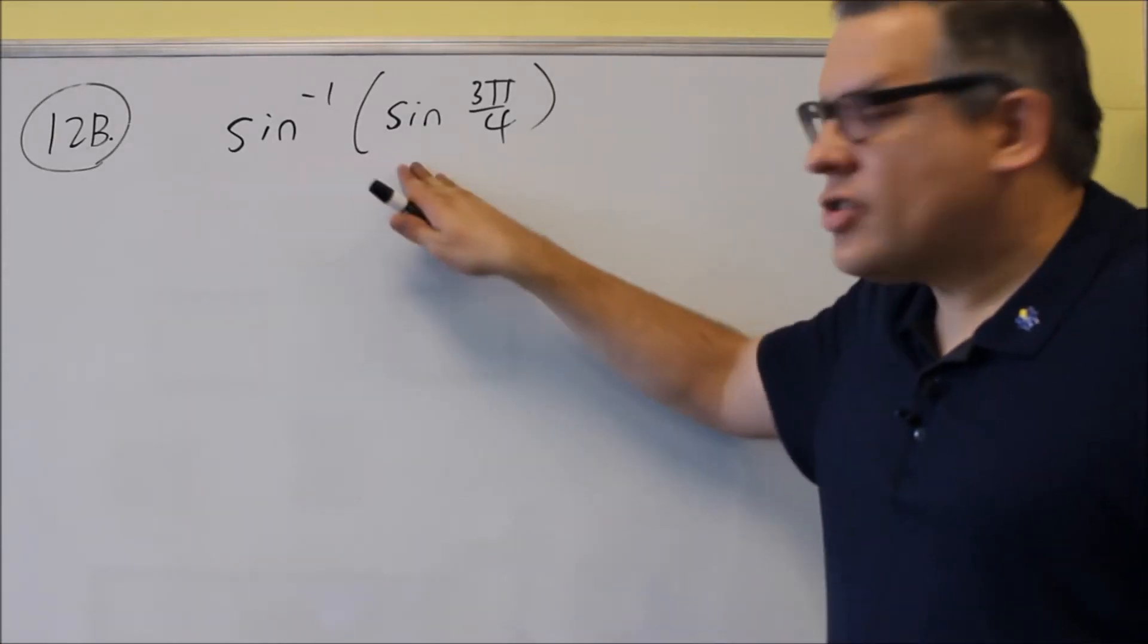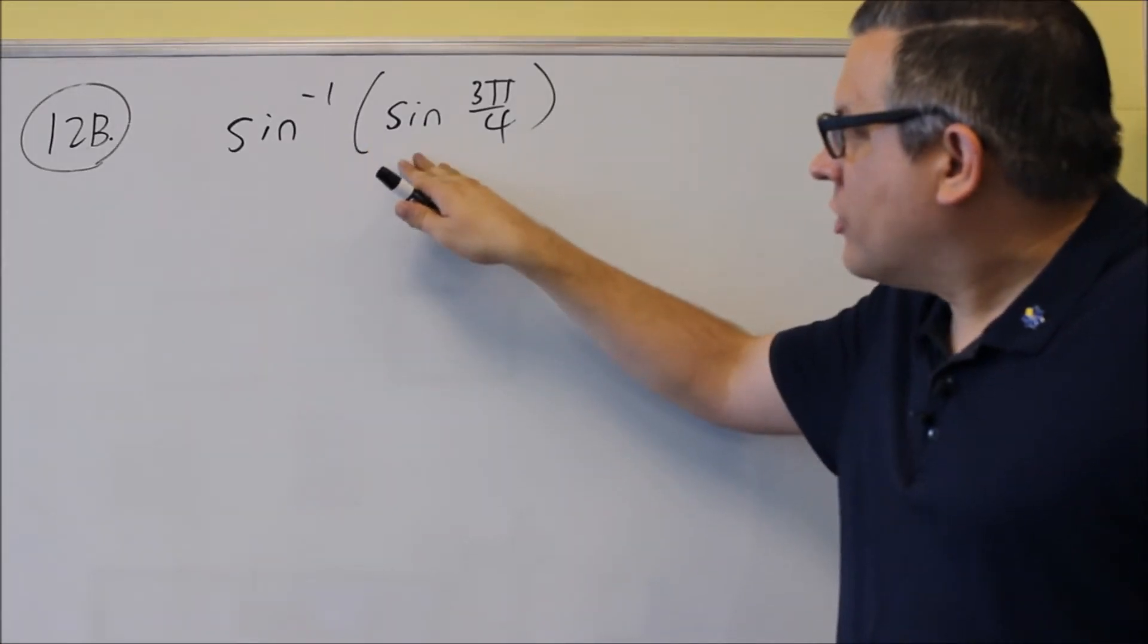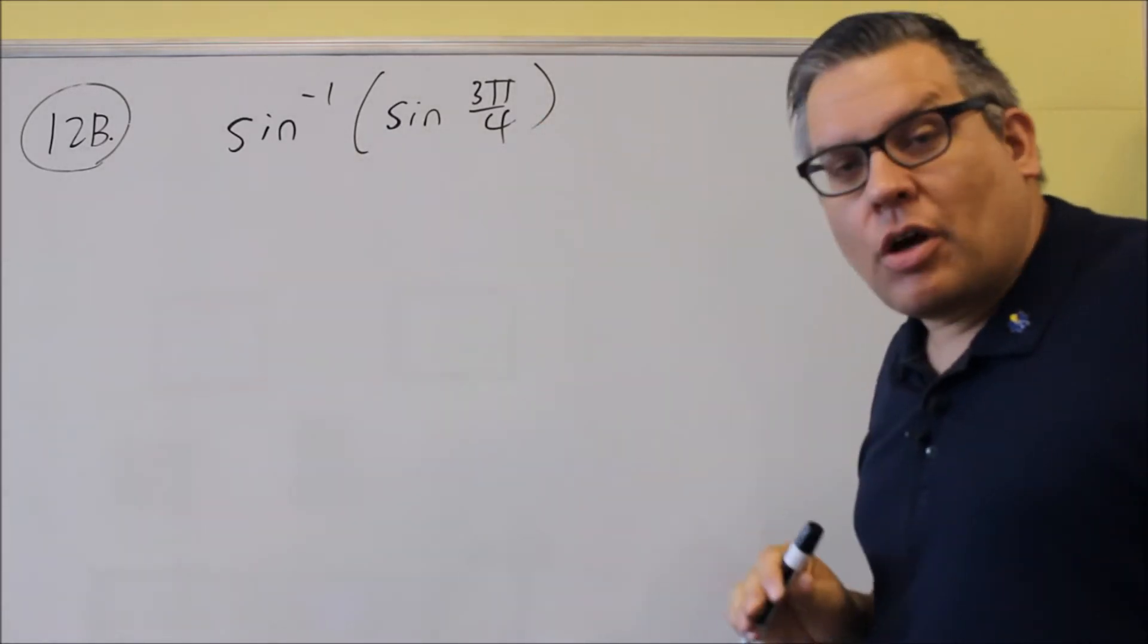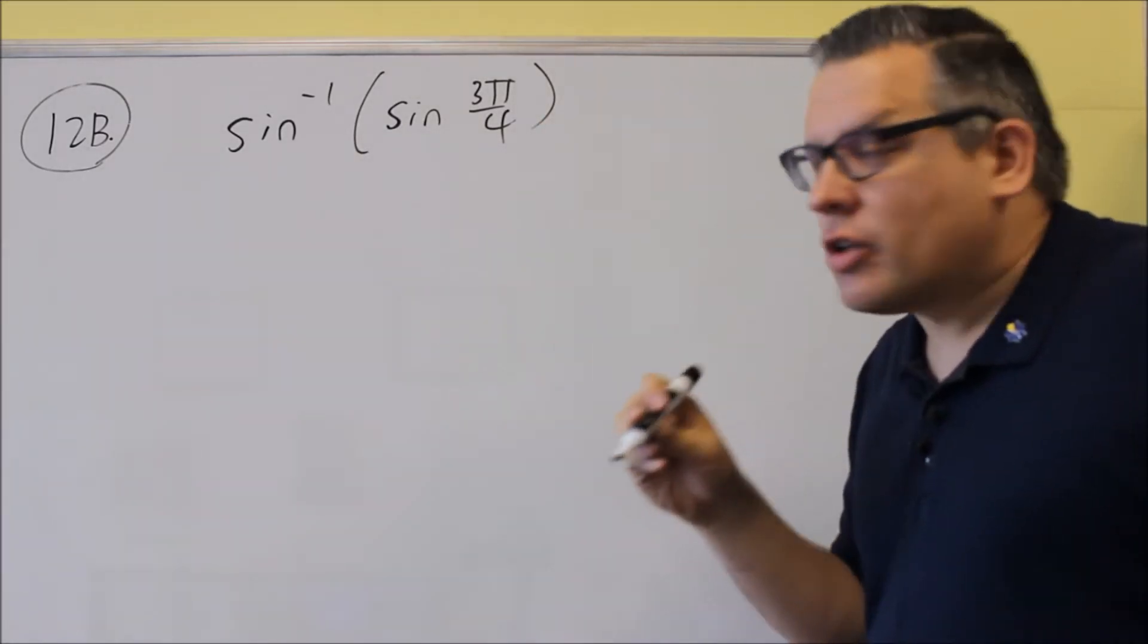Okay for problem 12, we have another one of these inverse trig ones. We want to know if these will cancel out and you'll just get the number itself on the inside. We have to look at those different rules.